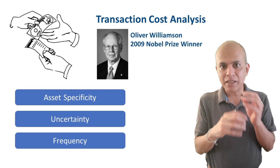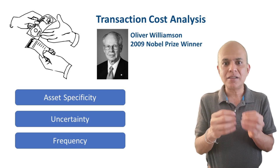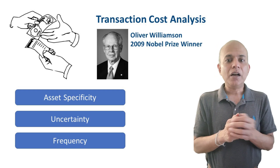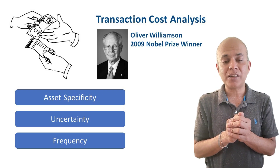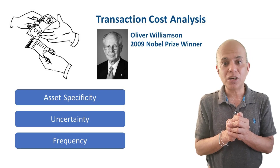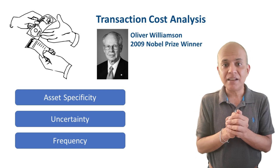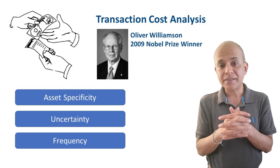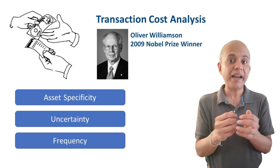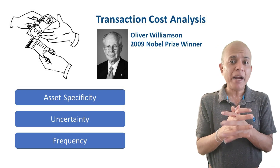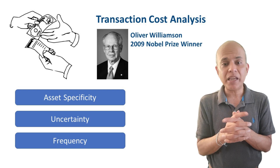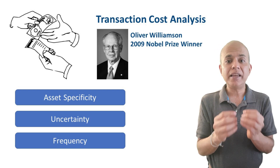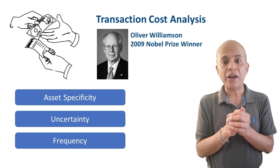This is a theory, and many people have expressed concerns against transaction cost analysis with many business examples. For instance, Toyota prides itself in having only one supplier for certain components — creating asset specificity and high dependence on suppliers. But in spite of that, they are substantially successful in their single-supplier operations.